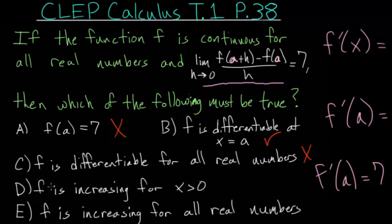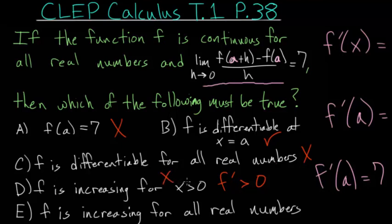For letter D: f is increasing for x values bigger than 0. A function is increasing when its derivative is bigger than 0, meaning the slope of the tangent line is positive. We know the derivative at a is positive, so the function is increasing at x equals a. However, for x values bigger than 0 in general, we don't have that information, and we don't even know if a is a positive number. So we don't have enough information to conclude if this is true or not.